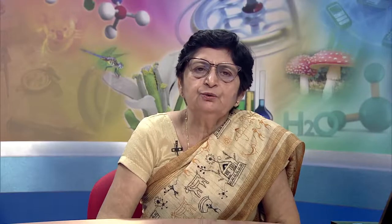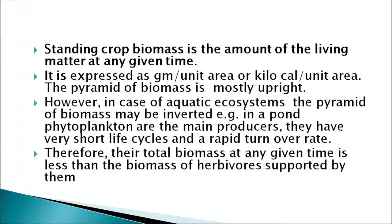The pyramid of biomass shows a large number of grasses being fed on by grasshoppers, which are in turn fed on by frogs, with each level's block indicating standing crop biomass. Standing crop biomass is the amount of living matter at any given time, expressed as grams per unit area or kilocalories per unit area. Pyramids of biomass are mostly upright. However, in aquatic ecosystems the pyramid of biomass may be inverted — for example, in a pond, phytoplanktons have a very short life cycle and high turnover rate, so the total biomass at any given time is less than the total biomass of the herbivores they support.